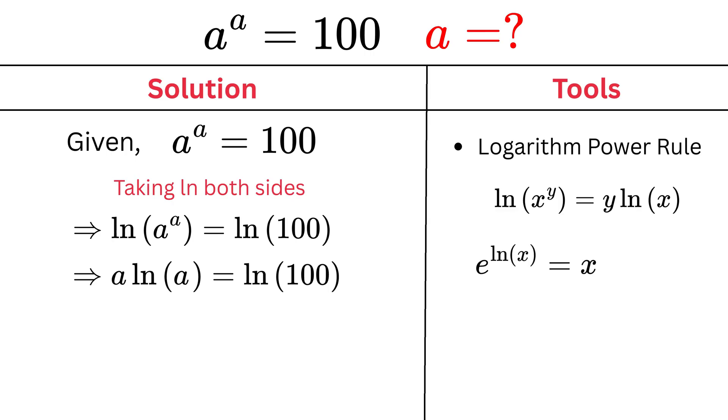We also know that e raised to the power of the natural log of x is equal to x. So we can rewrite a as e raised to the power of the natural log of a. That makes the equation e raised to the power of the natural log of a multiplied by the natural log of a equals natural log of 100.